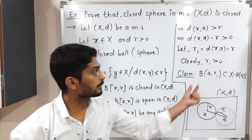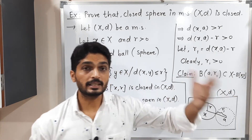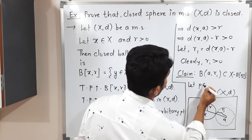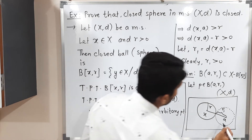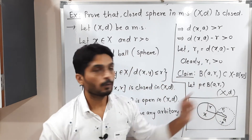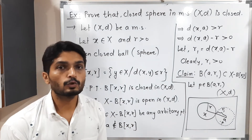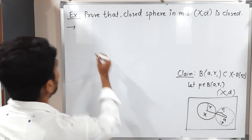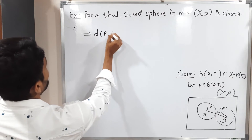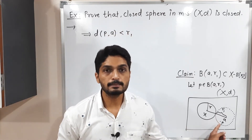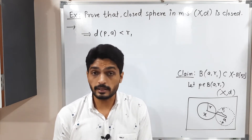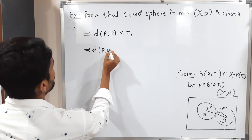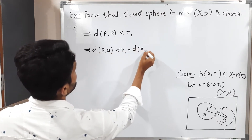To prove one set is a subset of another, we take one point from the first set and prove it belongs to the second set. So let P belong to B(A, R1). Since P lies in the open ball with center A and radius R1, the distance d(A, P) is less than R1. Substituting the definition of R1, we get: d(A, P) < d(X, A) minus R. This is inequality (★).